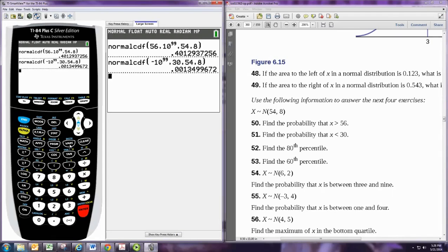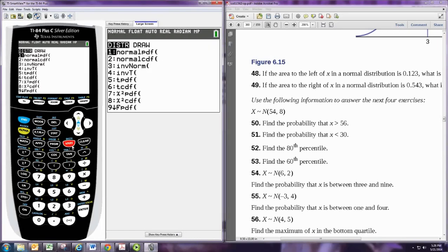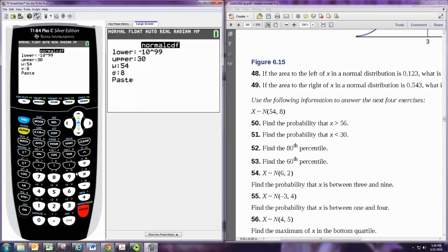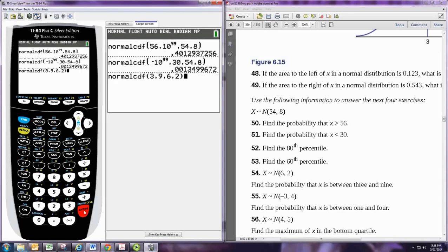Of course, the calculator is best equipped to deal with these questions, since we already saw it wants two numbers to find the probability between. So just put in two numbers, 3 and 9. The mean in this case is 6, standard deviation is 2. So you see the general syntax is left, right, mean, standard deviation. If you have an older calculator, you'll have to memorize that syntax as the previous interface is not available. And there's the probability.